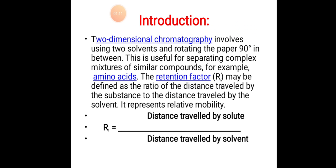Two-dimensional chromatography involves using two different solvents and rotating the paper 90 degrees in between. This is useful for separating complex mixtures of similar compounds, for example amino acids. The retention factor Rf may be defined as the ratio of distance traveled by the substance to the distance traveled by the solvent. Rf equals distance traveled by solute divided by distance traveled by solvent.